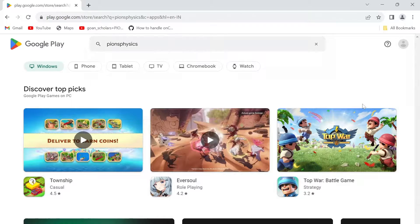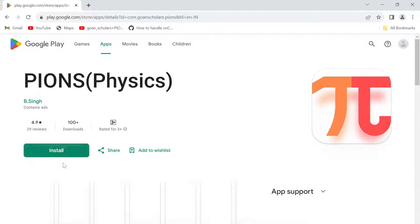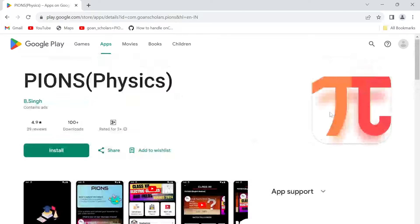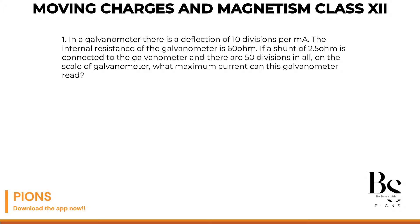Upload your doubts on the app to get video solutions. In a galvanometer there is a deflection of 10 divisions per milliampere, which means 10 divisions per milliampere current is flowing. The internal resistance of the galvanometer is 60 ohms.